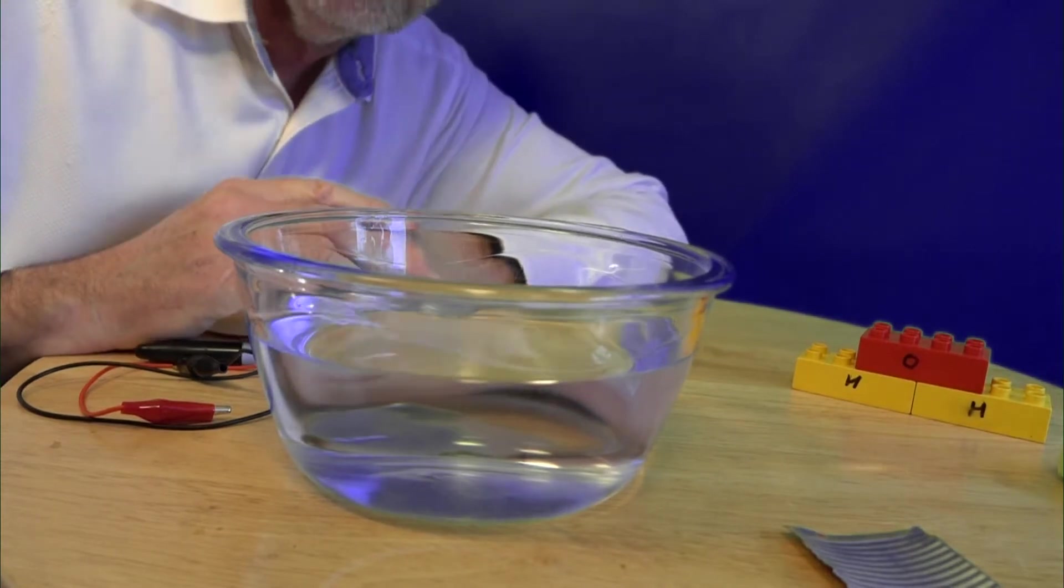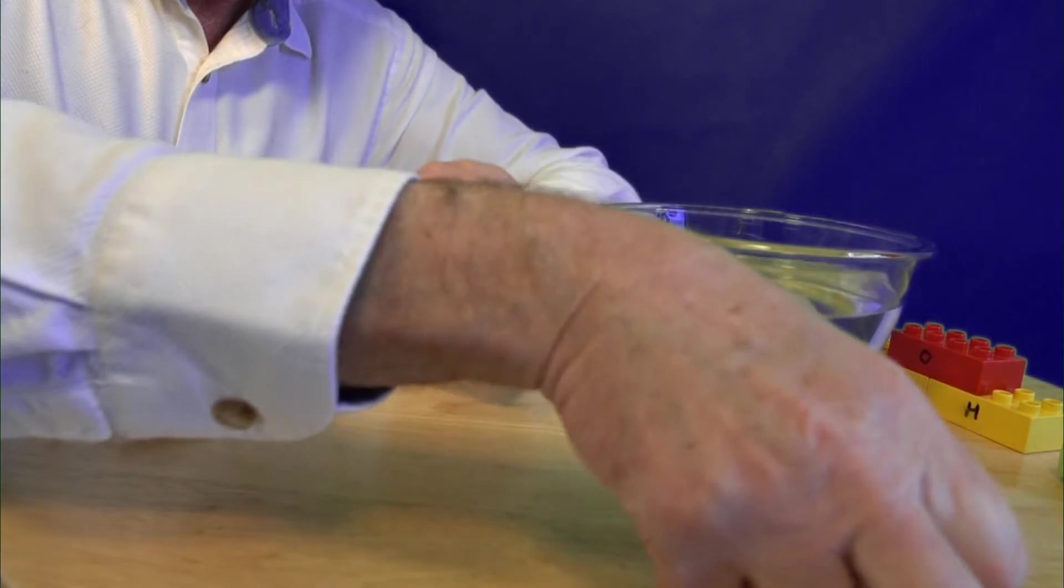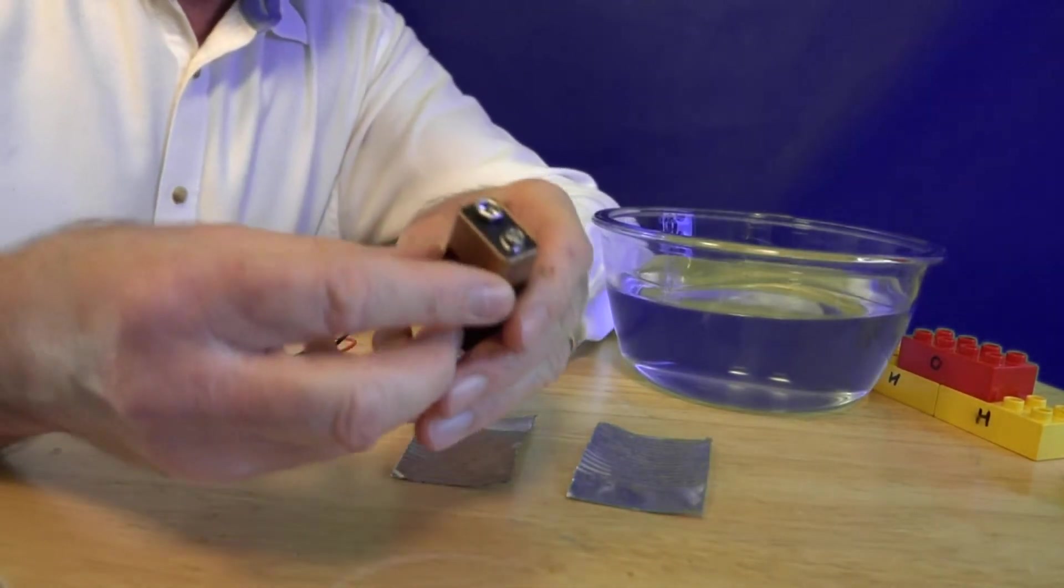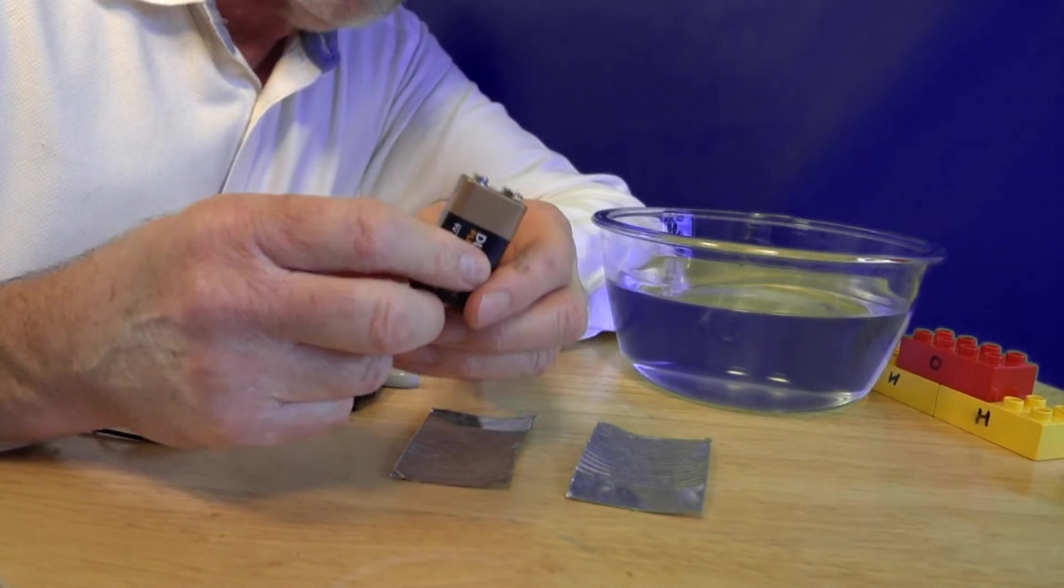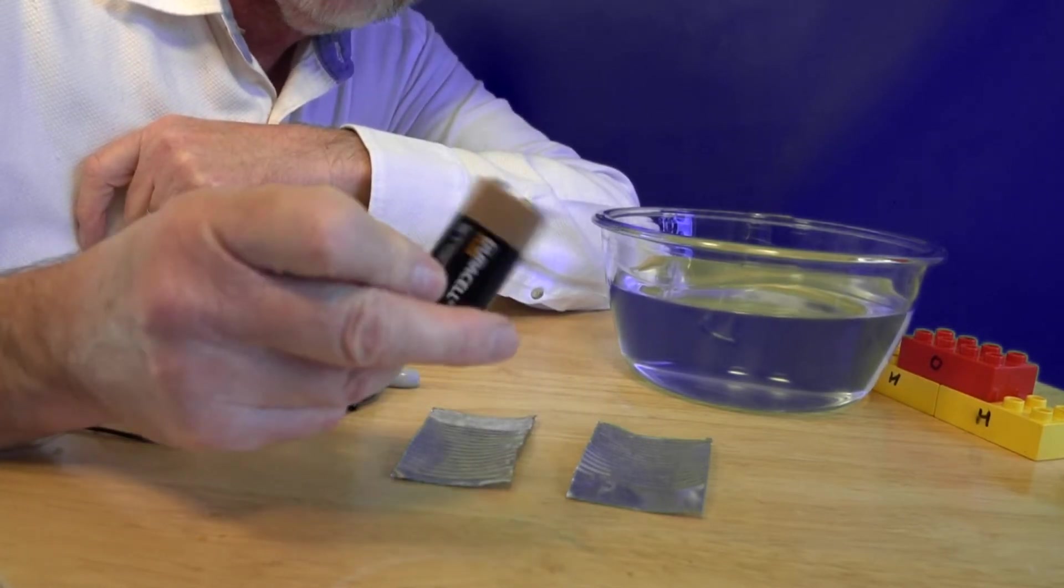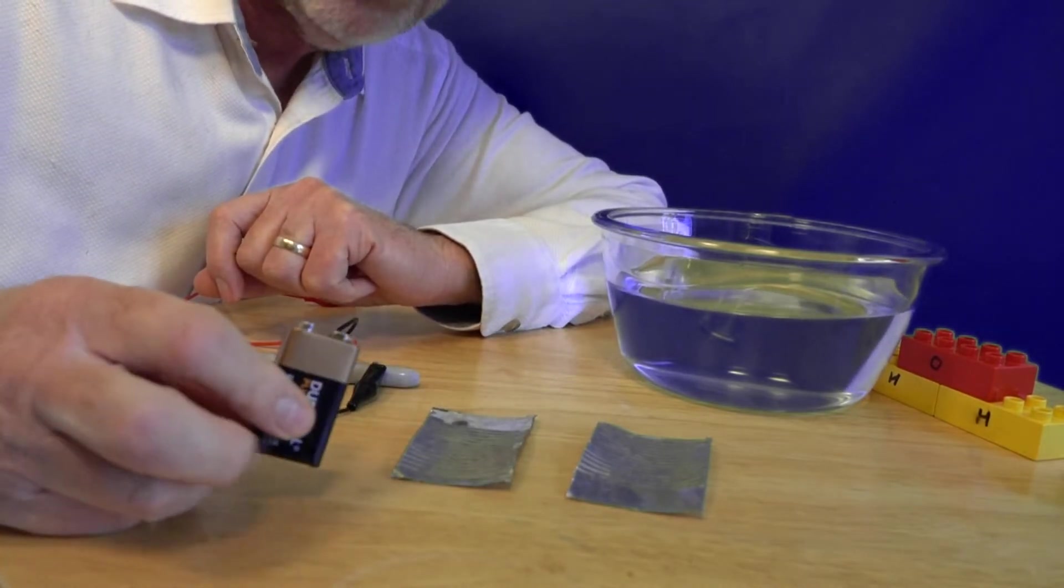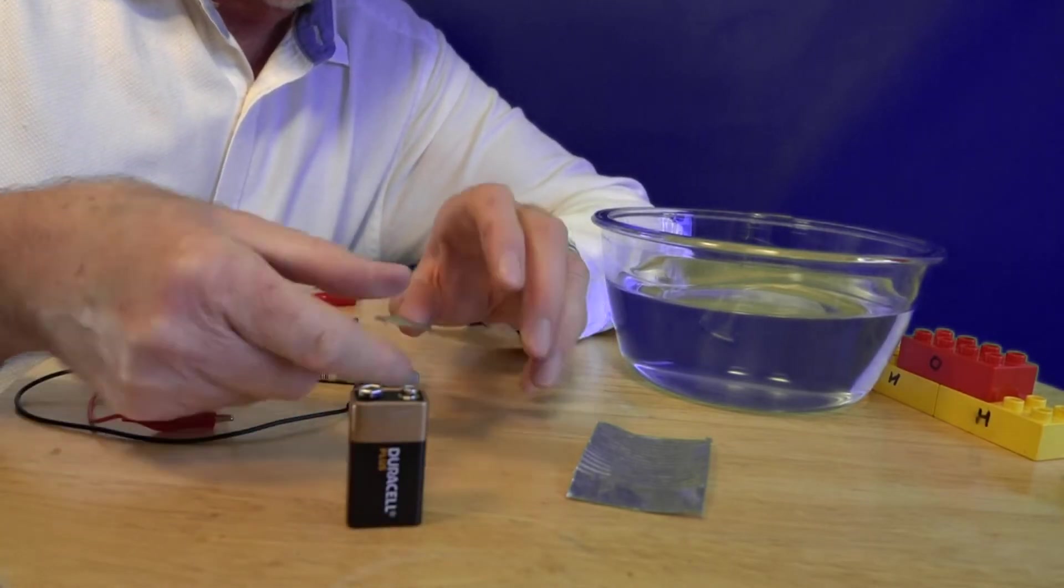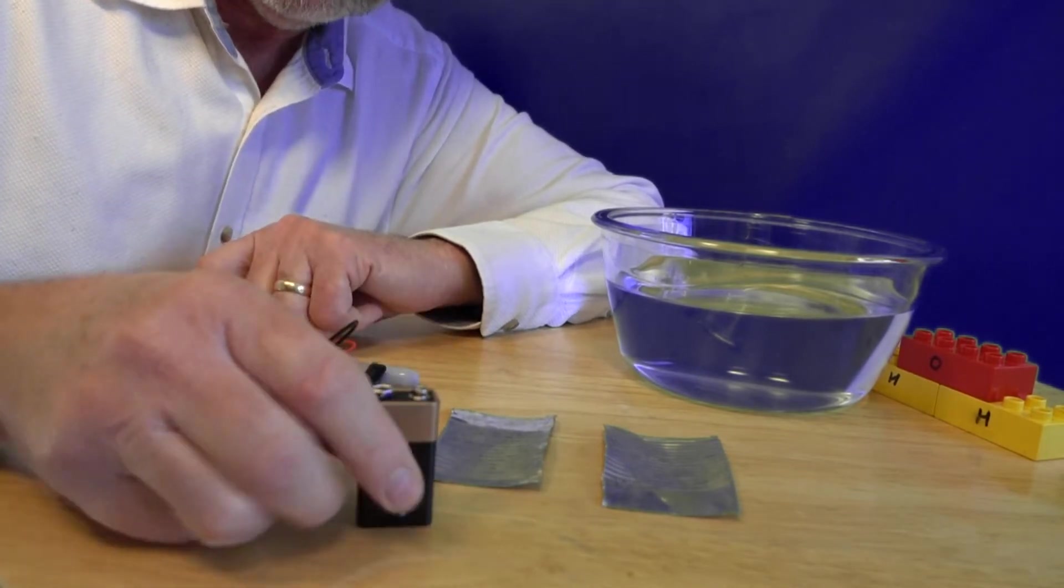So for this experiment what I've got is a bowl of water, and I've got two bits of tin which I've cut from a tin can, and I've also got a battery to supply the electricity. Now if you're going to do this at home you can do this at home but make sure you only use a little battery like this because electricity and water don't mix very well and they can be dangerous. So you can do this but you need to be careful not to cut your hands when you get your bits of tin and you need to be careful with electricity.